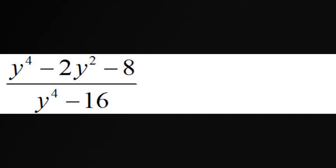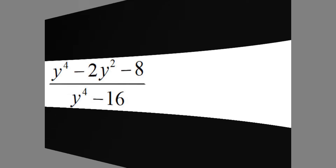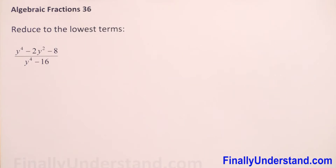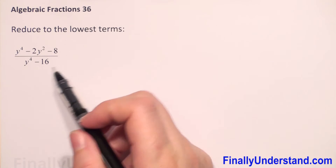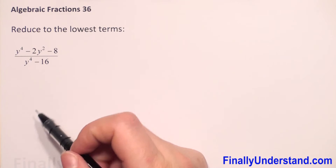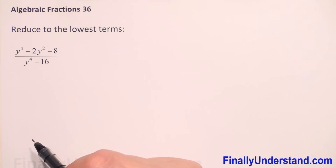We have a given algebraic fraction and we have to reduce this fraction to the lowest terms. We can reduce only when we have multiplication in the numerator and denominator. Because we have subtractions here, we first have to factorize.